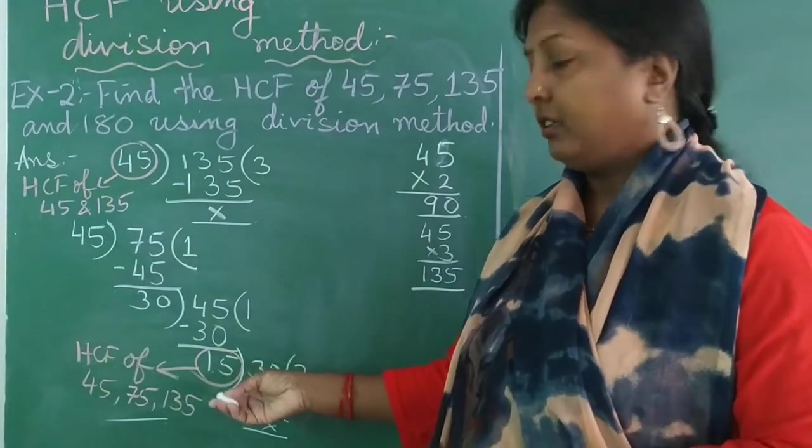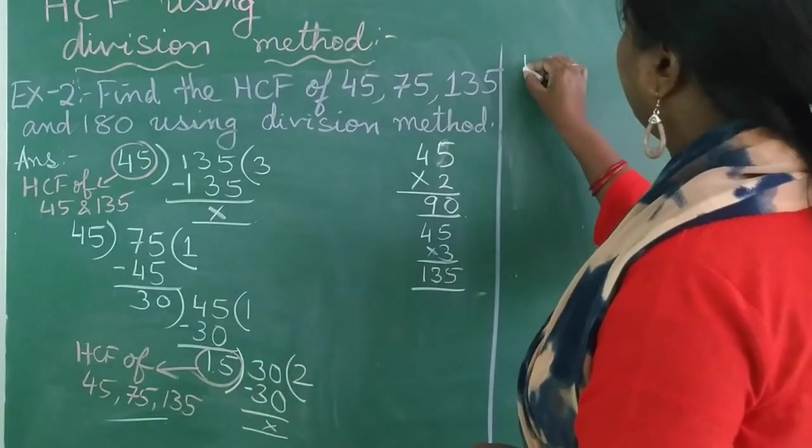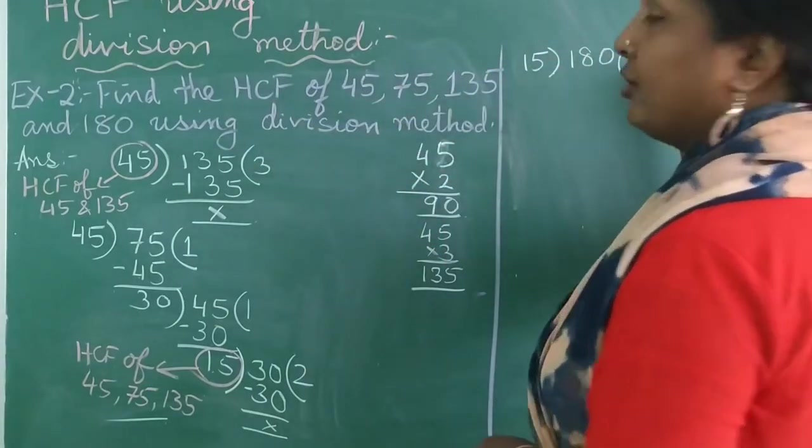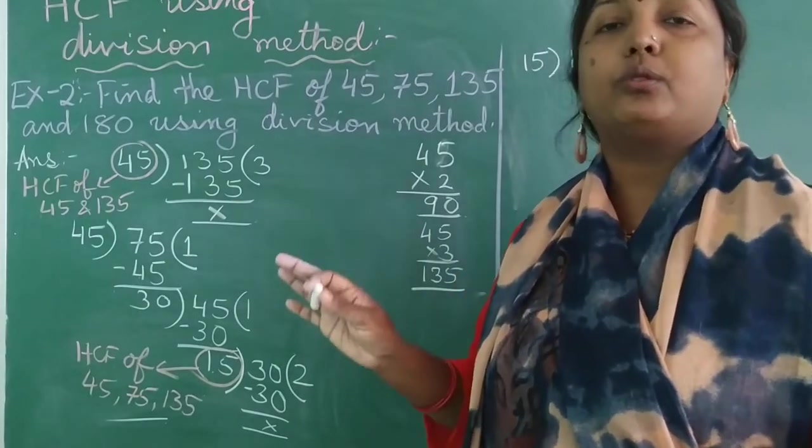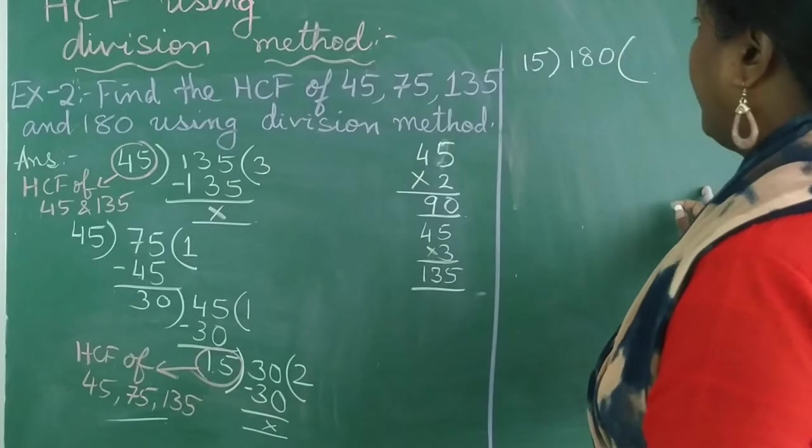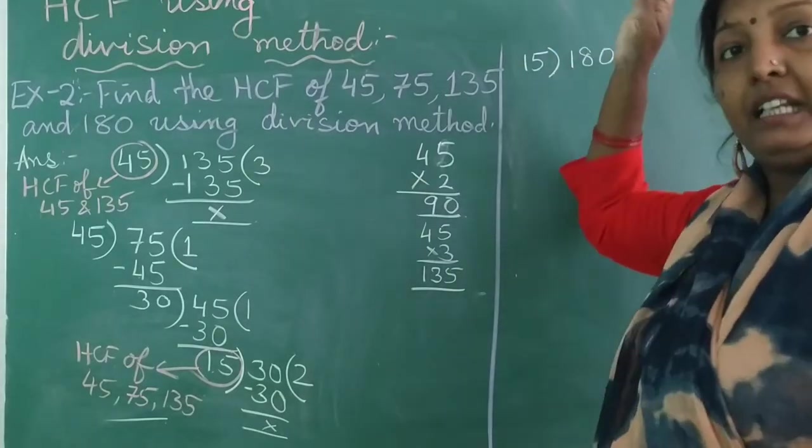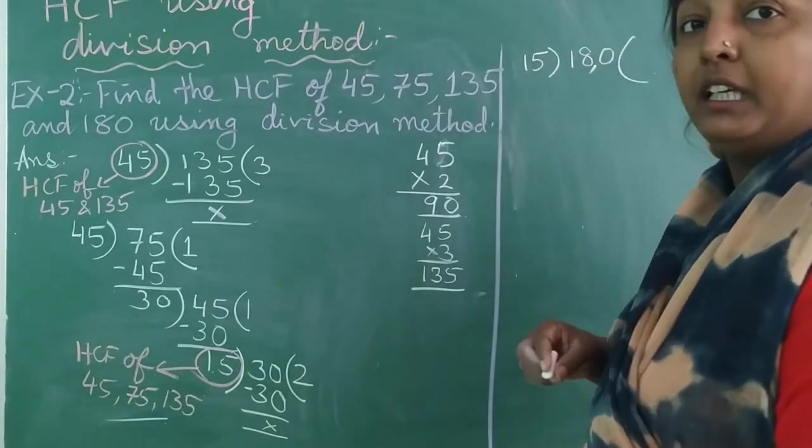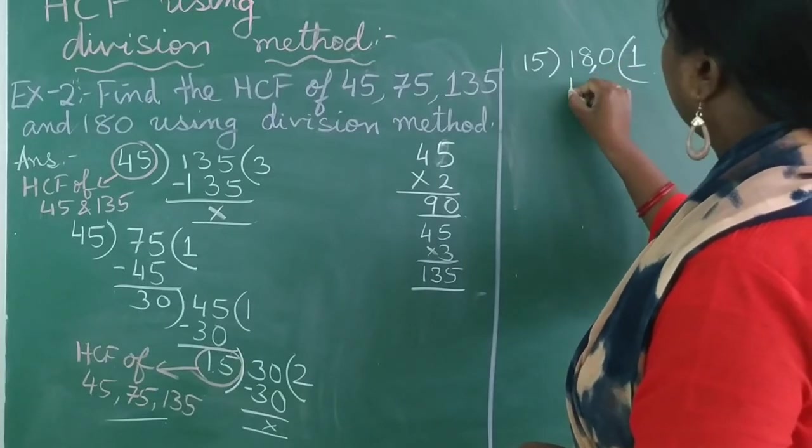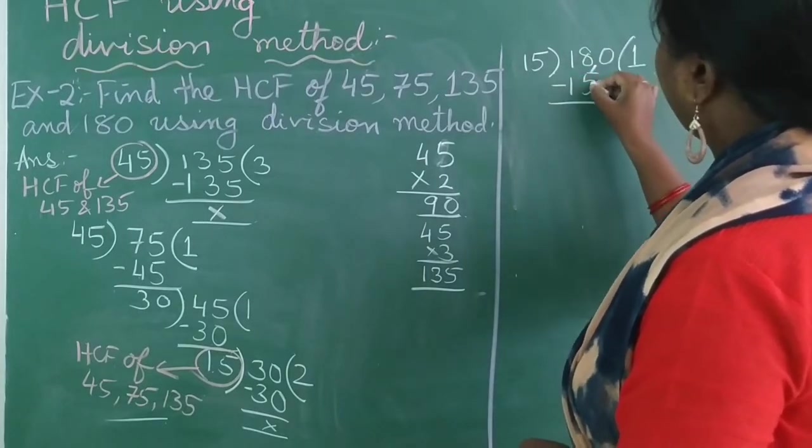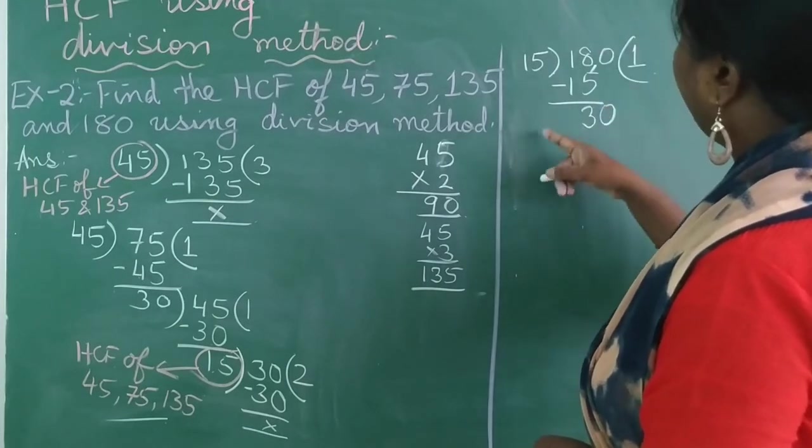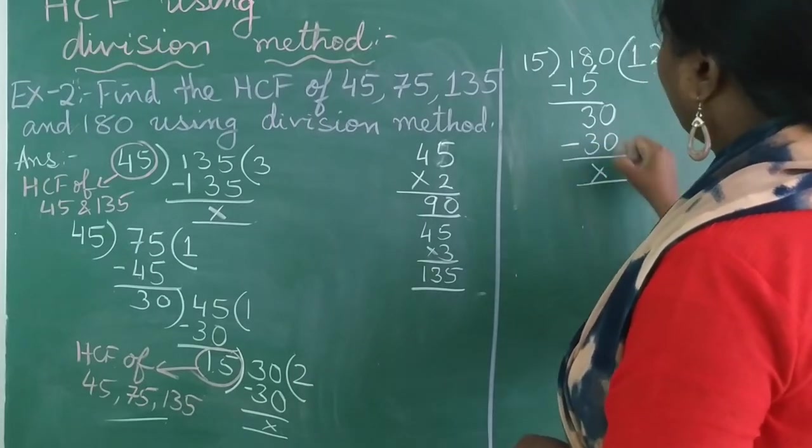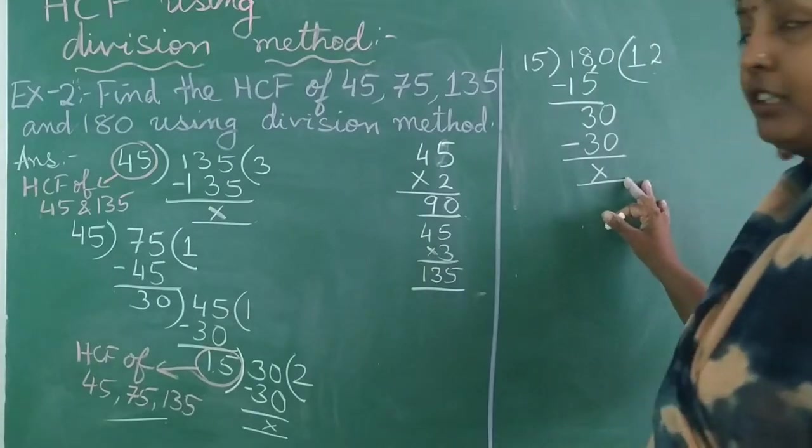Now we got 15 as the HCF. So we will take that 15 and divide it with the next number 180. So when you are dividing, remember, whatever the rule of divisions were, you will continue with the same. You will not go for multiplying 15 with 10, 11, 12. Don't go that way. Here you can see it is a big number. So we will first divide it with 18. So 15, 1s are 15. We get remainder 3. 3 is 0, 30. 15, 2s are 30 with the remainder 0. So here the division is complete because we got the remainder 0.